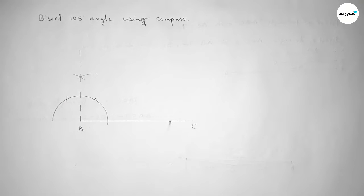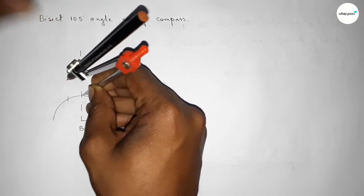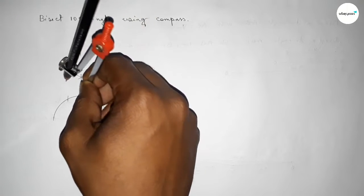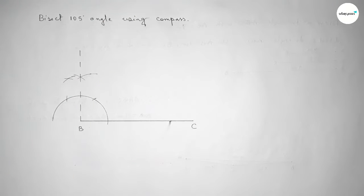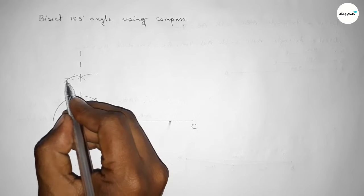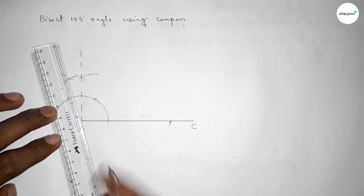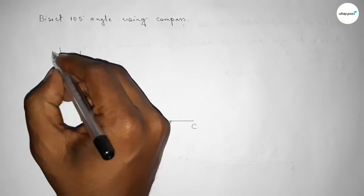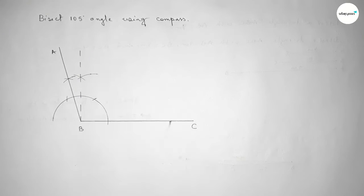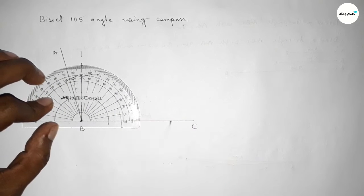Now we have to bisect the angle between 90 and 120 degrees. Taking any length and drawing an arc, putting the compass here and cutting here so both curves intersect at a point. Joining this line gives 105 degrees. Taking point A and checking the angle — this is perfectly 105 degrees.